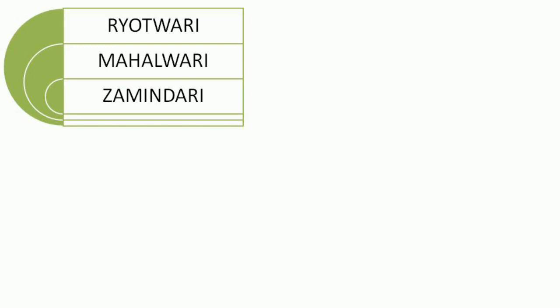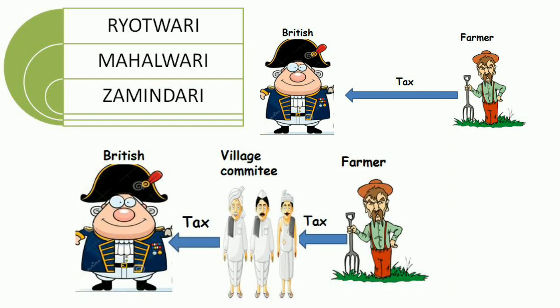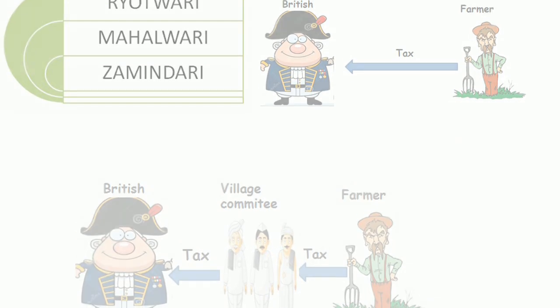Three land revenue methods were used: Zamindari, Ryotwari, and Mahalwari. Under the Ryotwari system, revenue was collected directly from cultivators. Under Mahalwari, land was divided into mahals and village committees were established to collect tax and revenue.